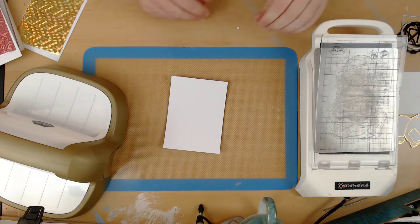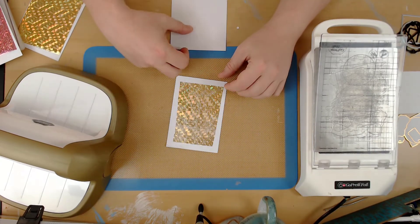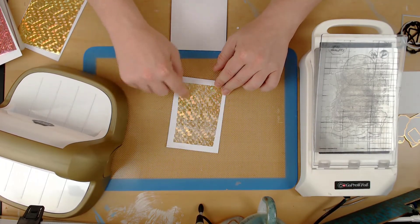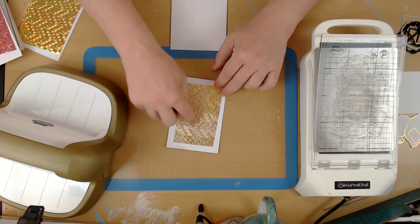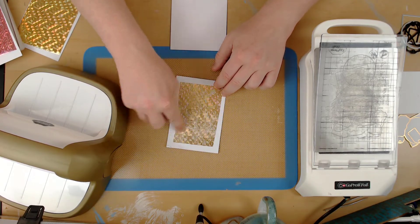Once you've finished passing it through your die cutting machine, just give the foiling a little bit of a burnish with your finger, perhaps just rub all over the surface.